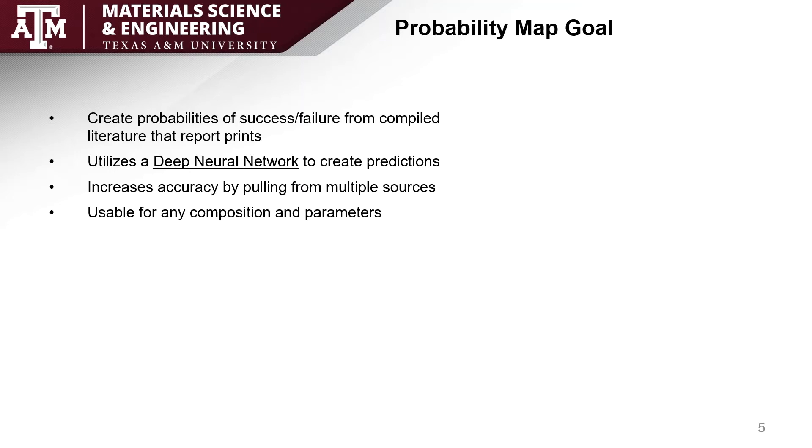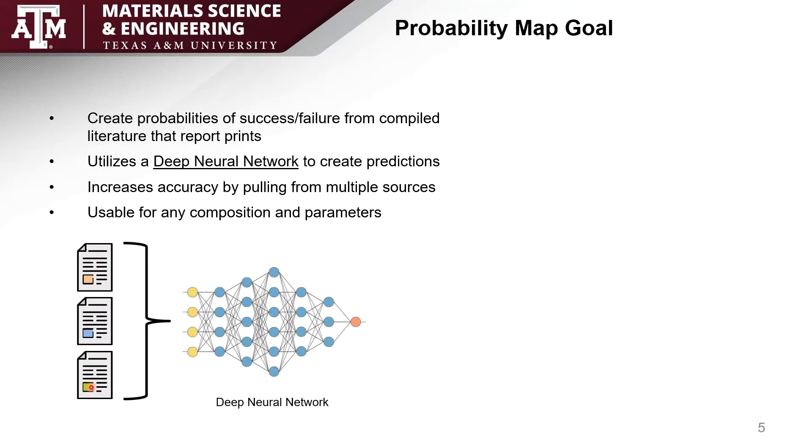To help visualize this a little bit better, I created this visual here. This shows the different papers or articles being fed through the deep neural network, looking at the different parameters that each literature article used as well as how the print ended up turning out, successful versus unsuccessful.